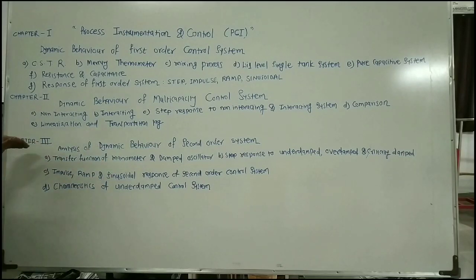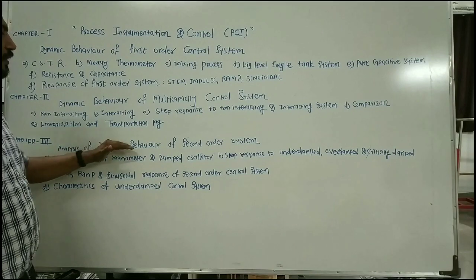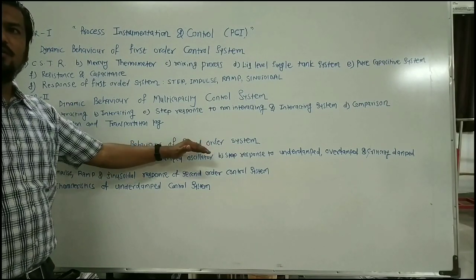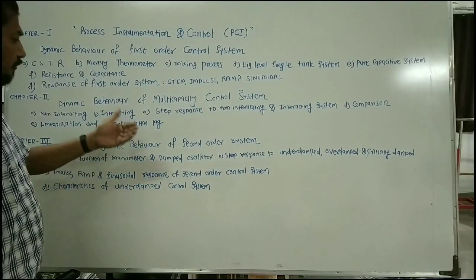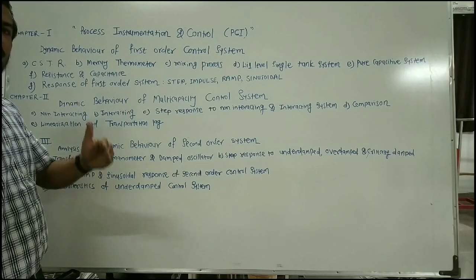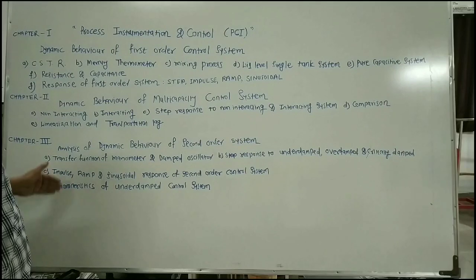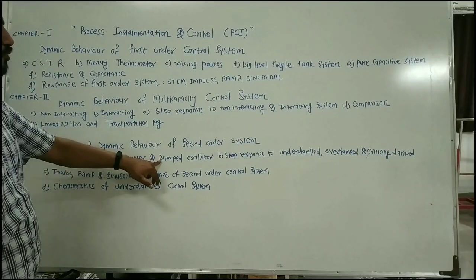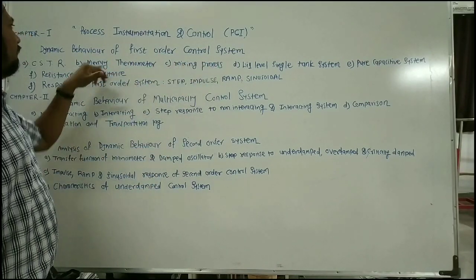Chapter number three deals with the dynamic behavior of the second order control system. Again you have to determine the transfer function of the second order system. Here you have to prove that the manometer is a second order control system and the damped oscillator is a second order control system — similar to what you proved for the first order systems in chapter one.